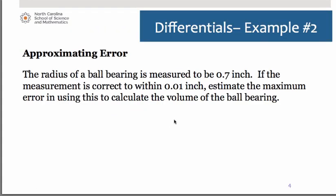Let's take a look at an application problem in which we're going to approximate error. We are told the radius of a ball bearing is measured to be 0.7 inches. If the measurement is correct to within 0.01 inch, estimate the maximum error in using this to calculate the volume of the ball bearing. We are told that the radius is 0.7. We are told the measurement is correct to within 0.01 inches. So that's going to be dr. We can also refer to it as delta r.